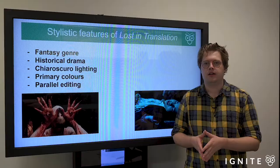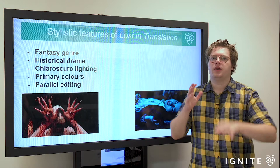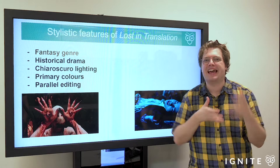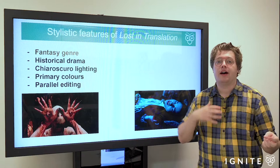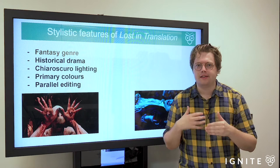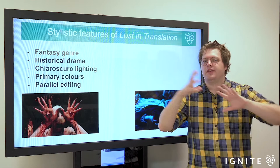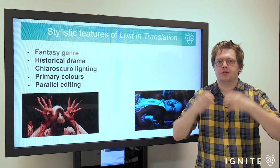Another stylistic feature del Toro uses is parallel editing, where two scenes happening concurrently intercut with each other. In Pan's Labyrinth, this gives us a very kinetic portrait of the chaos in this world. A specific example is when the phalangists are seeking resistance fighters in the woods, intercut with Ophelia also being monitored and oppressed within the house she resides in. This illustrates how both within the natural world and the domestic space, there's no escape from the implications of violent patriarchy.